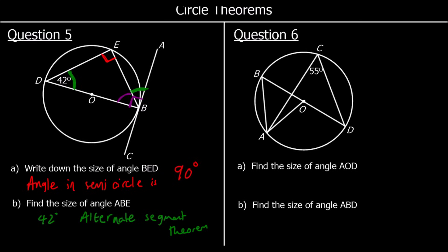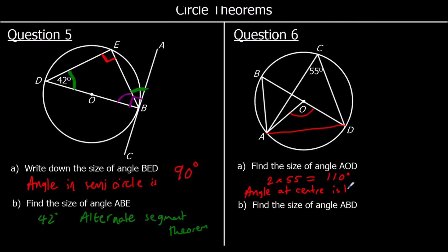Question 6: find the size of angle AOD. We've got angles in the same segment, and the angle at the center is twice the angle at the circumference. We've got two 55 degree angles, which gives 110, so the angle at the center is twice the angle at the circumference: AOD = 2 × 55 = 110 degrees.